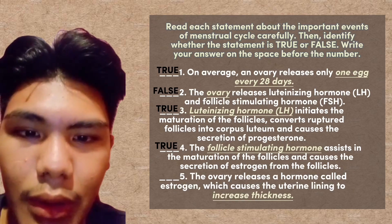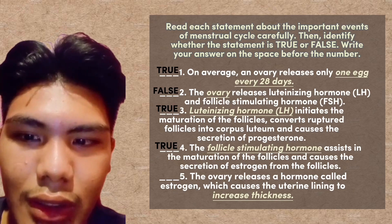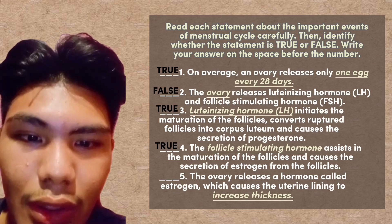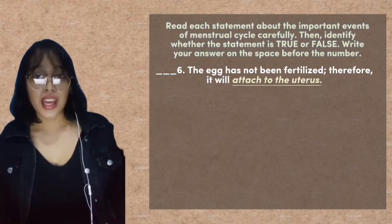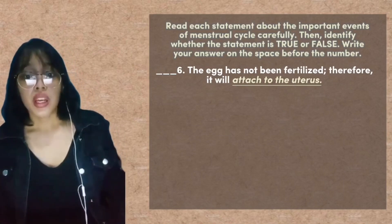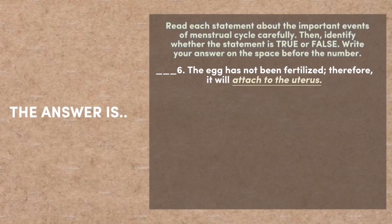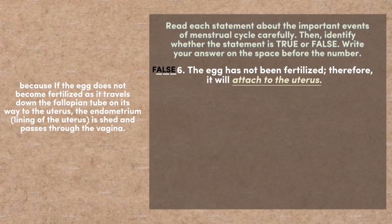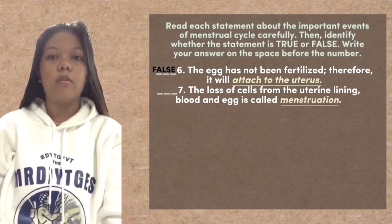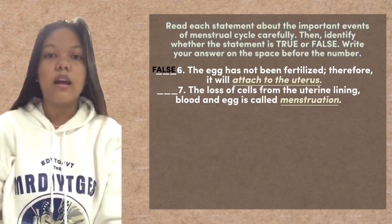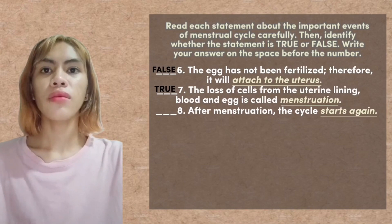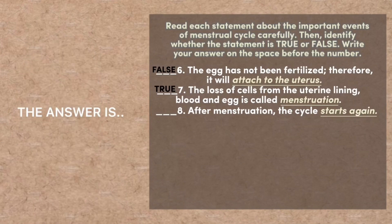Number 5: The ovary releases a hormone called estrogen, which causes the uterine lining to increase in thickness. The answer is true. Number 6: The egg has not been fertilized; therefore, it will attach to the uterus. The answer is false, because if the egg does not become fertilized as it travels down the fallopian tube on its way to the uterus, the endometrium lining of the uterus is shed and passes through the vagina. Number 7: The loss of cells from the uterine lining, blood, and egg is called menstruation. The answer is true. Number 8: After menstruation, the cycle starts again. The answer is true.